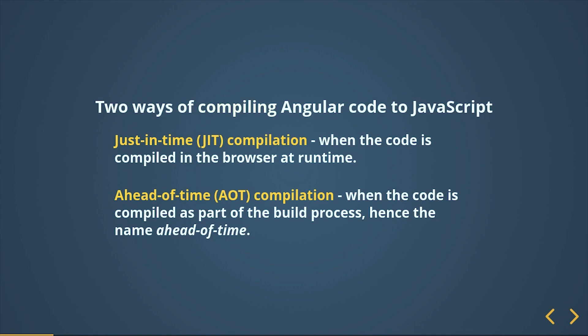Here in Angular, the compiler is used to translate code written by the developer into a machine-understandable format — in this case JavaScript, which is rendered on the browser. There are two main compilation options available: one is JIT, which means Just-In-Time compilation, and another is AOT, which means Ahead-Of-Time compilation.